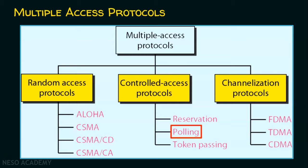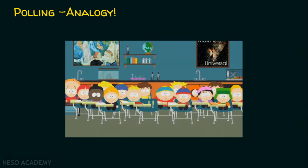We will start polling with an analogy. Let us assume there is a class full of students. The teacher will call the roll number of the student and know the attendance of the student. Here, the teacher is the master or the controller. The teacher will create an environment so that all students are involved in the class activities without any collision or chaos. Even if there is no teacher in the class, someone in the class must be elected for management purposes, so that there will be no chaos or collision in the class activities.